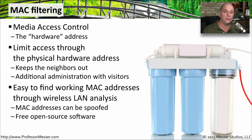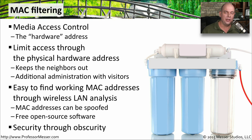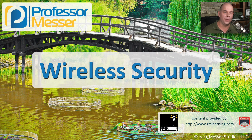Unfortunately, it's very easy to determine what MAC addresses are in use in a particular area. A simple network analysis scan can show you everyone using the wireless network, and these MAC addresses can be spoofed using capabilities built into drivers or free open-source software. This is what we call security through obscurity — making something more difficult doesn't make it truly secure. MAC filtering is only a very limited access control mechanism and we should not rely on it to provide any type of wireless security.